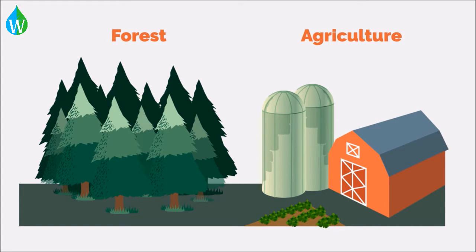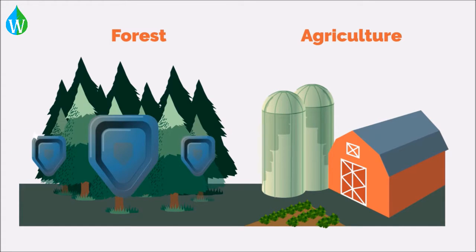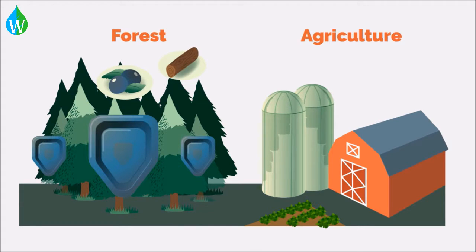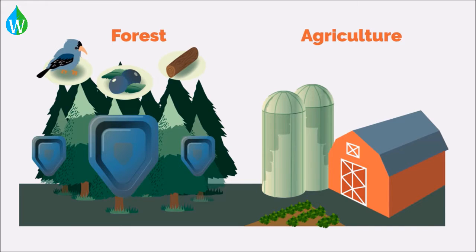Forestry's primary goal is to grow, manage and conserve forests. Usually this is so that the wood and other natural resources can be harvested over a long period of time, often measured in decades. However, foresters often manage the habitat so that certain species, such as an endangered bird, will be protected and conserved for future generations.